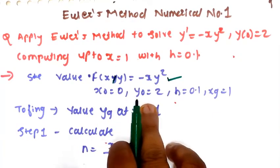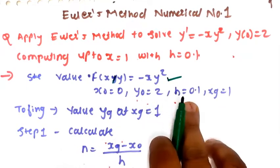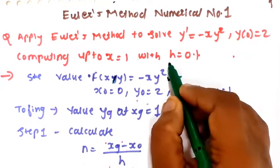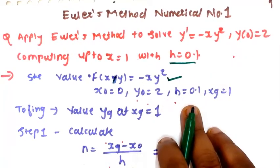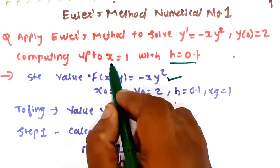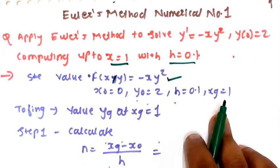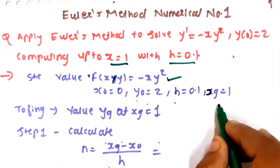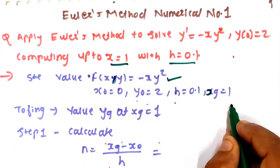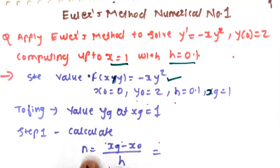So y₀ is 2. The step size h is 0.1 and you have to find out the value of y at x = 1, which we call x_n. So x_n is given as 1 and you have to find out the value of y_n.